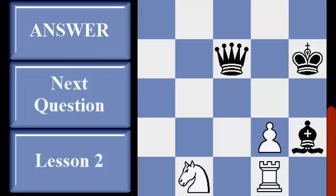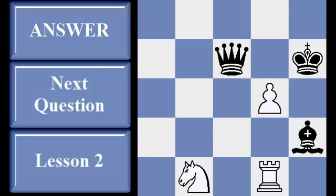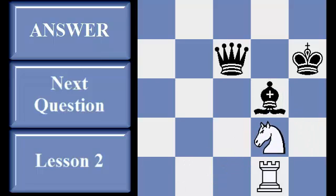Notice how black's pieces are on the same color. Fork the pieces with a knight. Pause the video for more time. White moves the pawn with tempo to clear the square to fork the king and queen with the knight.